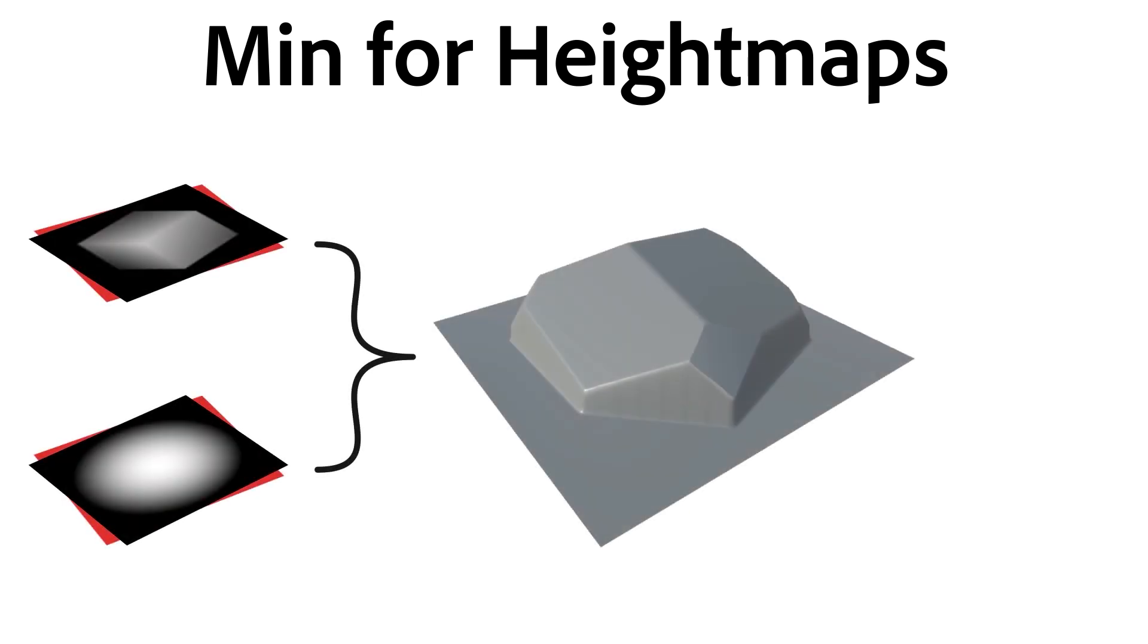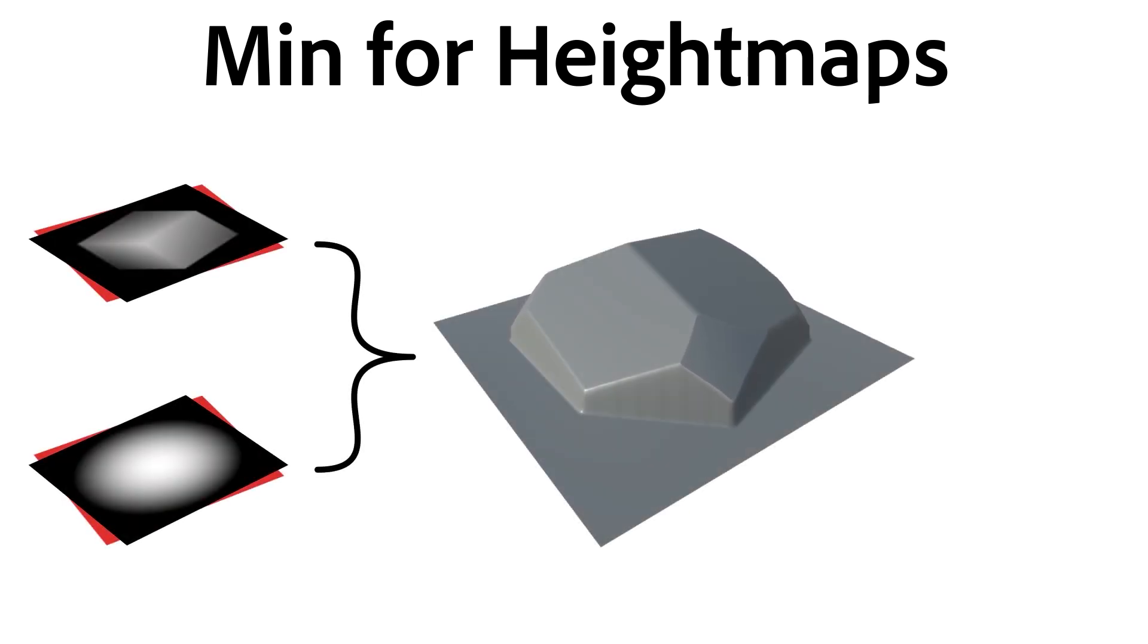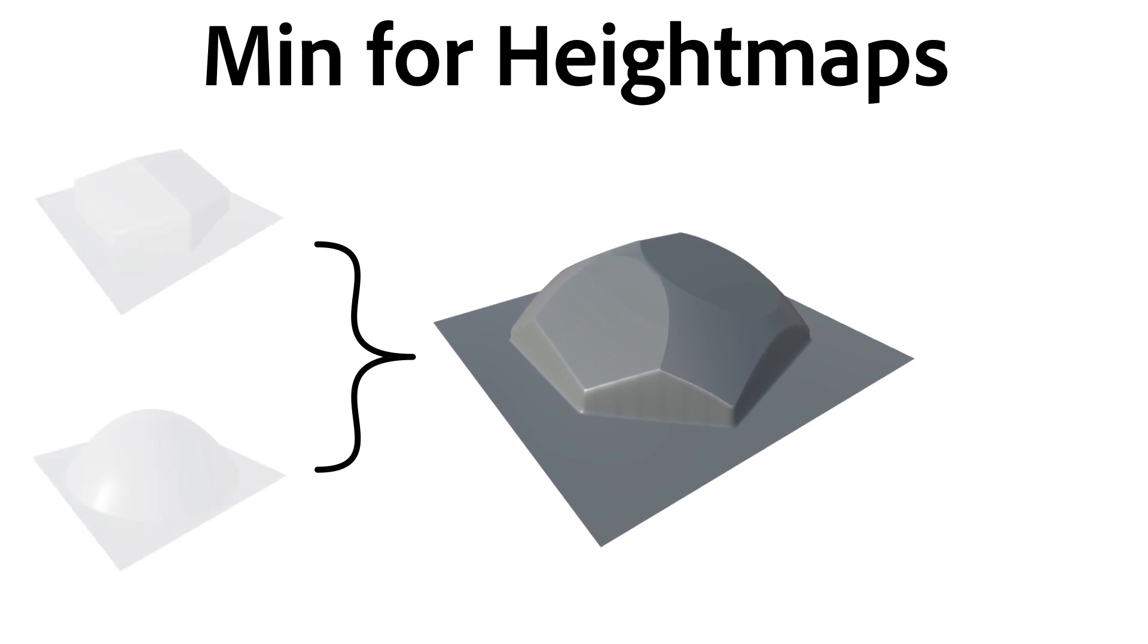Min is especially useful for height maps, as you can use it like a 3D modeling operation. Think of it as a Boolean intersection operation, where it only keeps the volume that is present in both components.